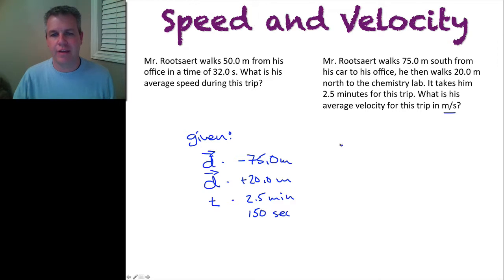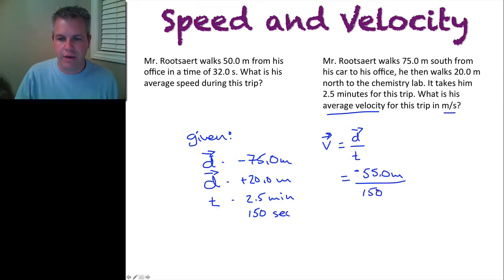Now I have everything that I've been given. So of course it's asking me for average velocity. So velocity is equal to my displacement over my time. And so in calculating my total displacement, I know that I've gone 75 meters south. Then I turn around and I come back 20 meters north. So my total displacement here is negative 55.0 meters over my 150 seconds.